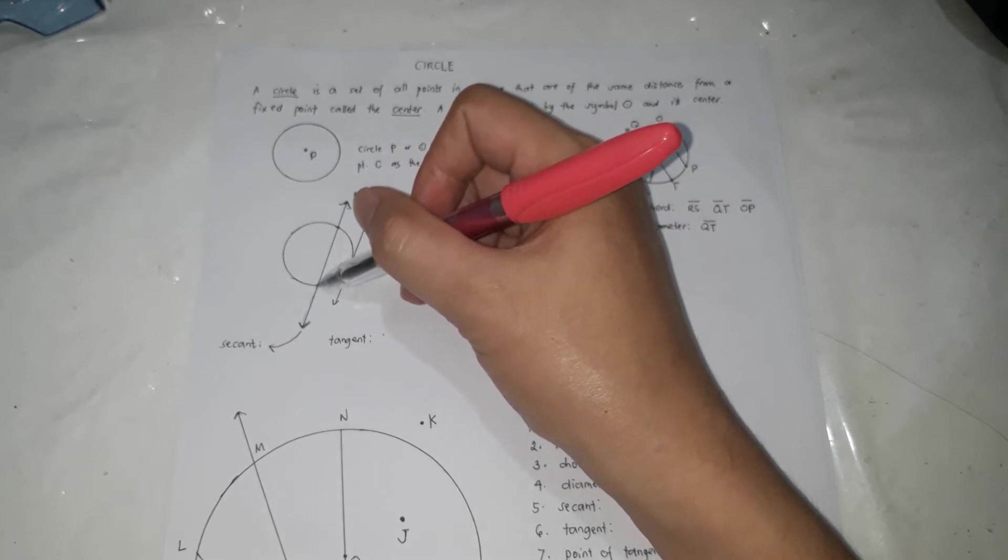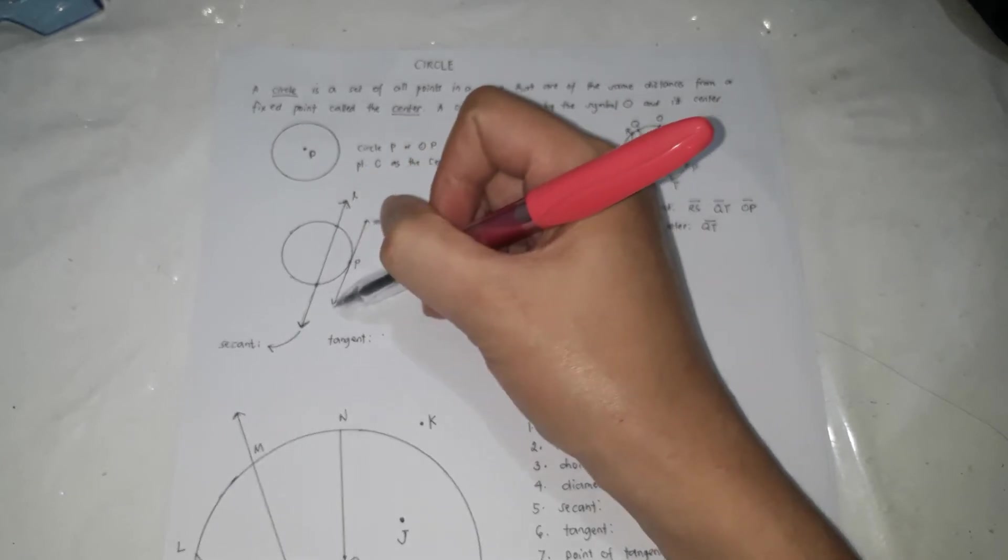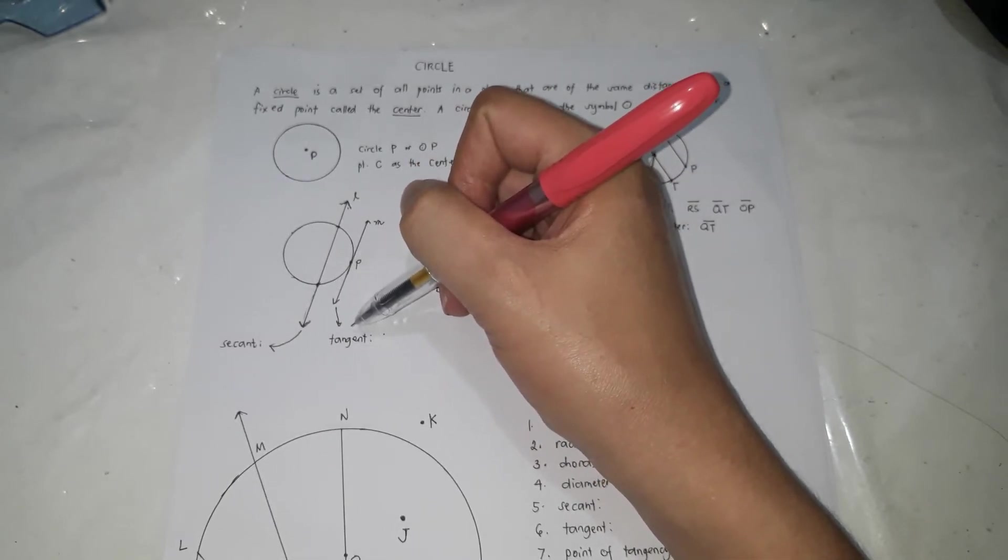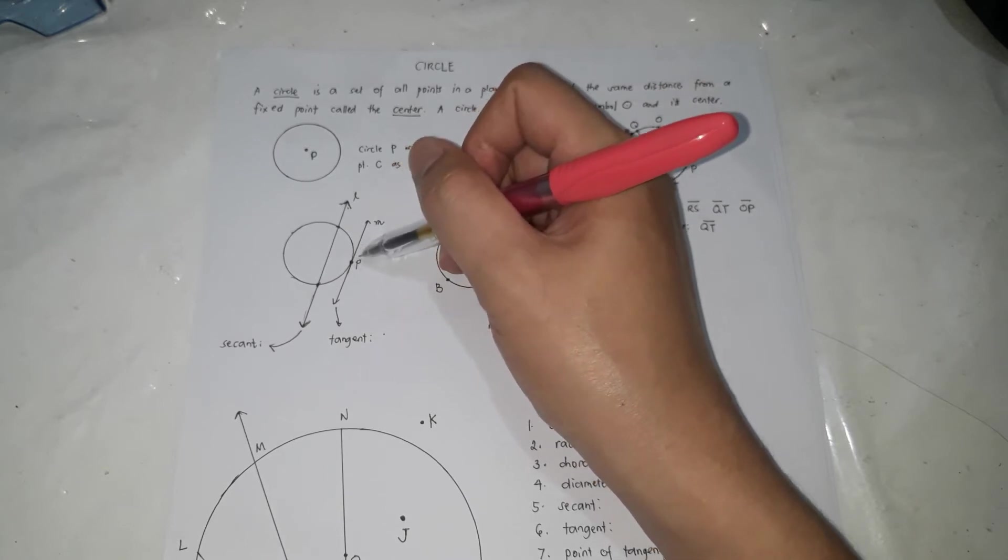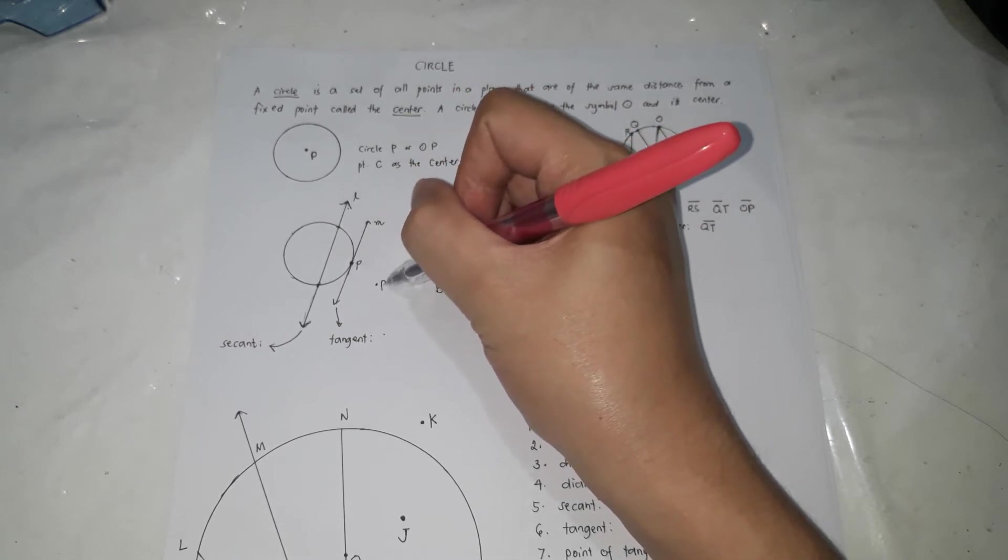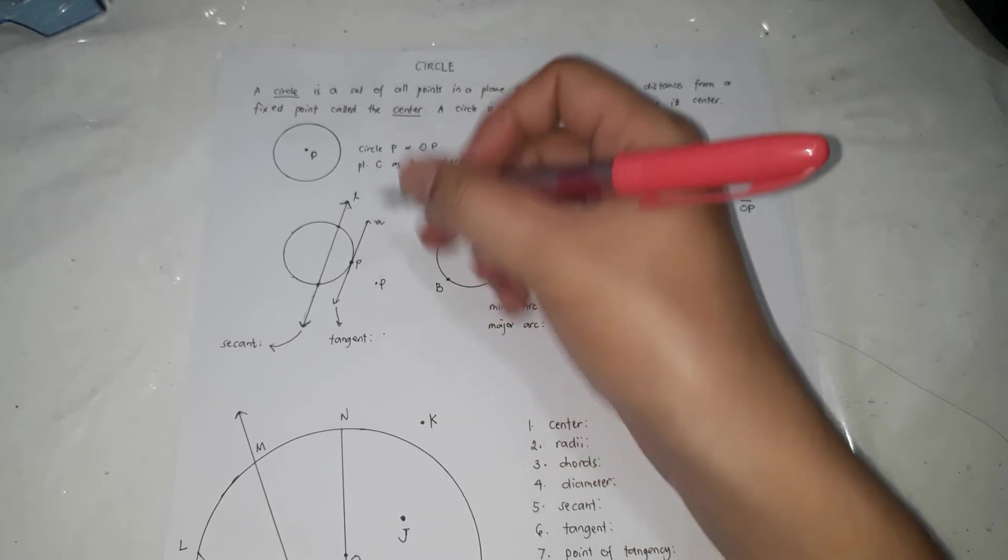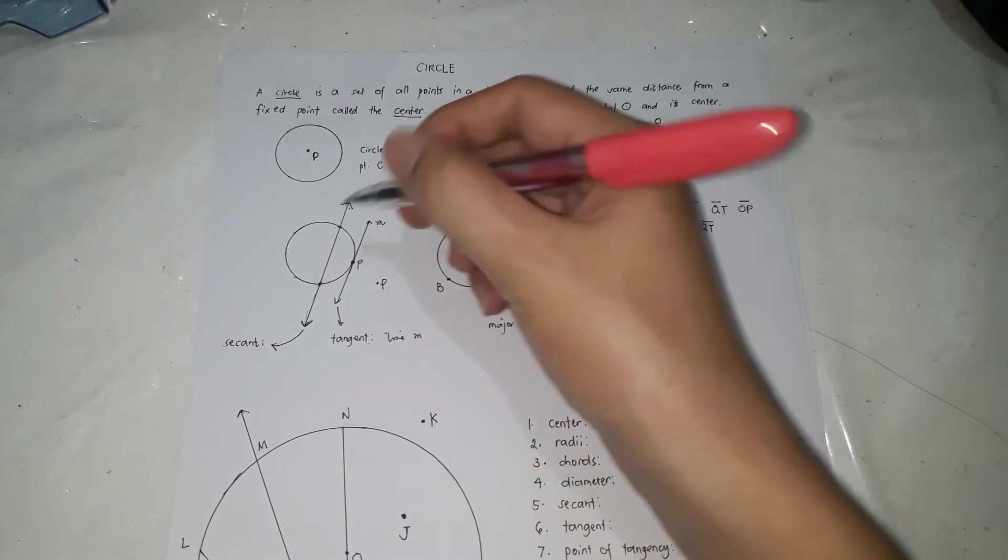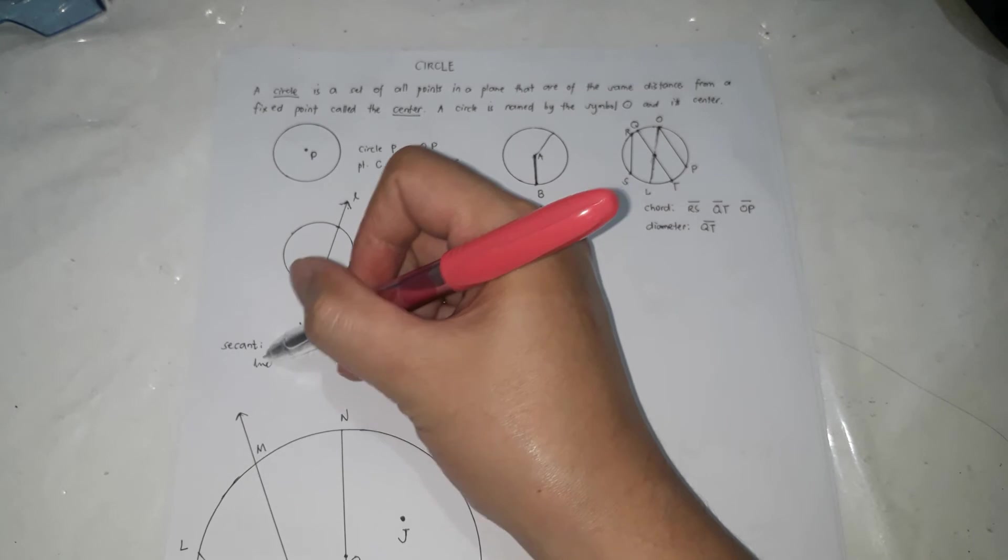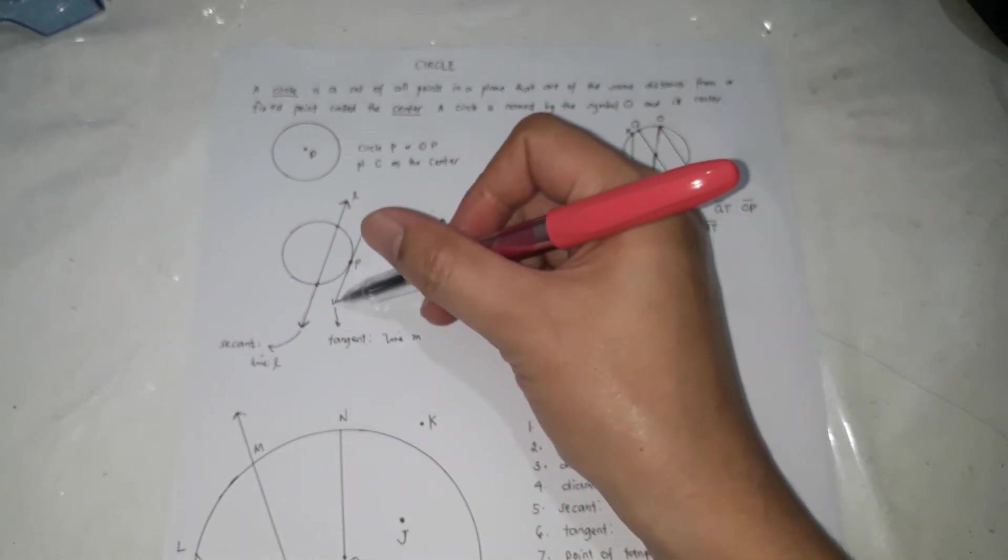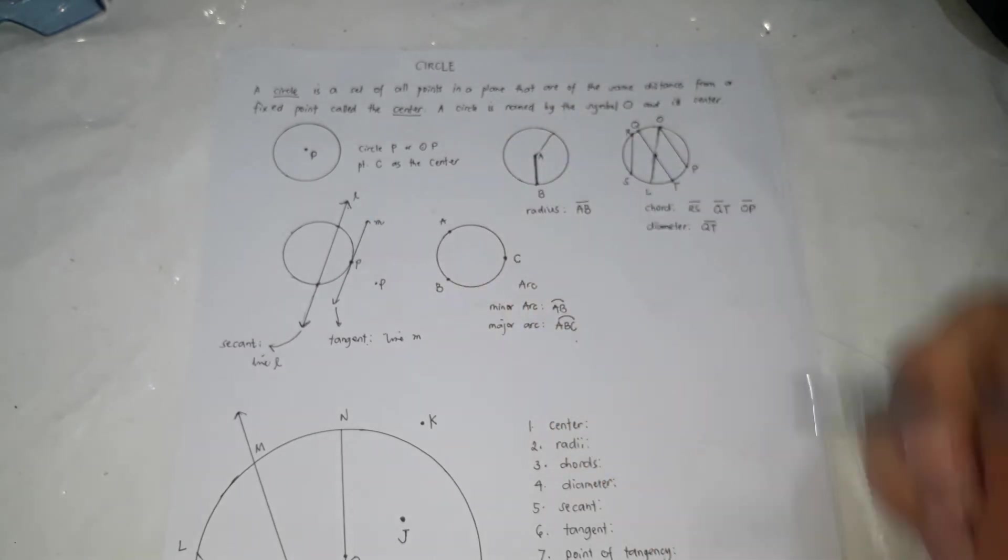So if there's only one point, if it only passes through one point on the circle, if it only touches at one point, that's called tangent. And tangent - where it passes, that's the point of tangency. Where it intersects the circle, that's called the point of tangency. So point P is the point of tangency. The tangent is called line M, and the secant is line L. The tangent is line M, and this point is called the point of tangency.